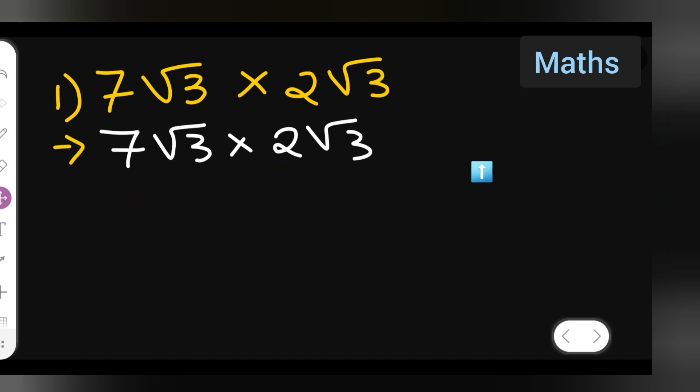Now keep the 7 and 2 on one side and root 3 on the other. So how are we going to do this? 7 multiplied by 2, and here one more bracket, root 3 multiplied by root 3.